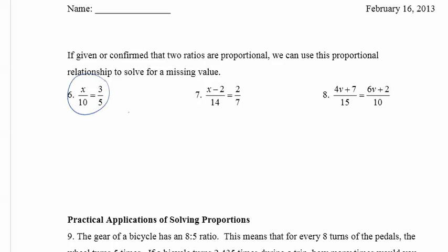So let's look at an example. If given or confirmed that two ratios are proportional, we can use this proportional relationship to solve for a missing value. In this one right here, they're really asking what value for x will make these two proportional. You want them to be proportional, and you're finding the value of x that will make them proportional. So if you remember the means and extremes theorem, well, I think it's a theorem, the property, you will first identify: this is a, and that's b, this is c, and that's d, because x is a number, you can represent it as a.